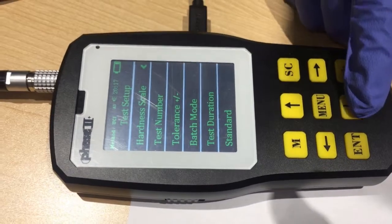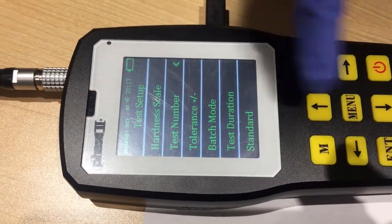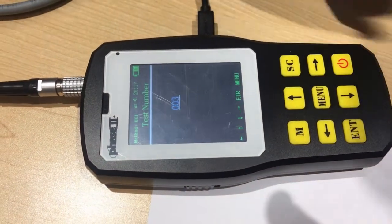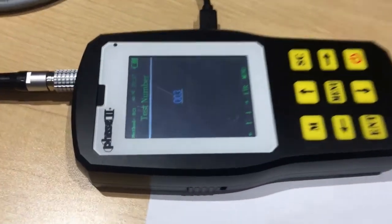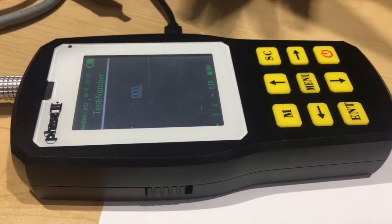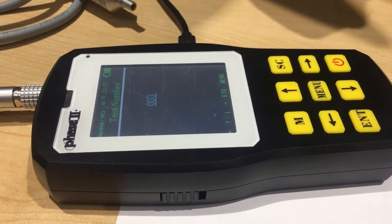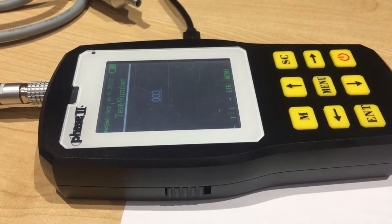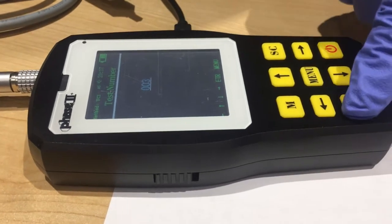We got some other options here. The main things we are going to focus on is the test number. Test number means how many times you want to test to get an average for the hardness you want. So it basically depends on yourself. Here we set it as three, that means we test three times and get an average to decide the hardness number. If you are sure for it, press enter again.